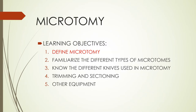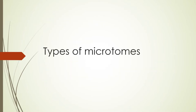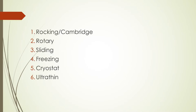Now we're done with defining microtomy and got a good glimpse of the basic parts. Now we're going to familiarize ourselves with the different types of microtomes used in the laboratory. We have: the rocking or Cambridge microtome, the rotary microtome, the sliding microtome, the freezing microtome, the cryostat, and the ultra-thin microtome. Keep in mind these aren't the only microtomes in the world, but for study purposes, these are the six important ones you need to know.